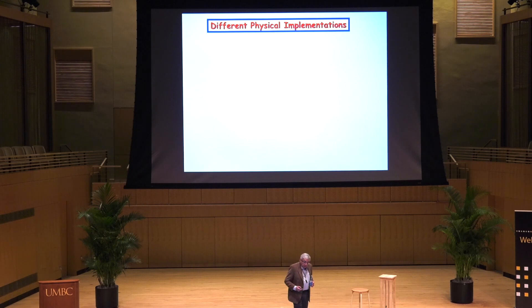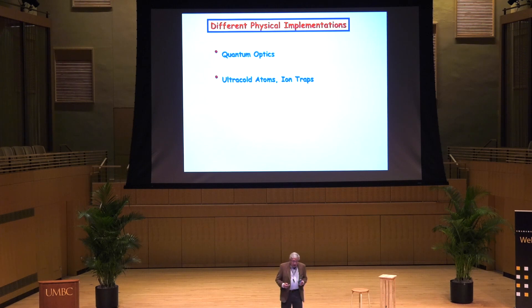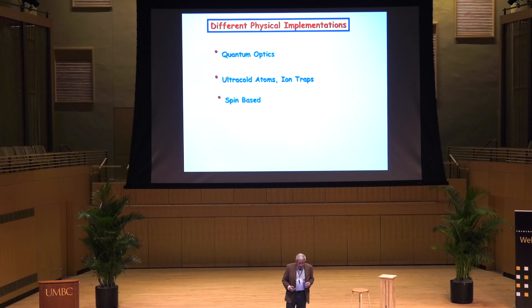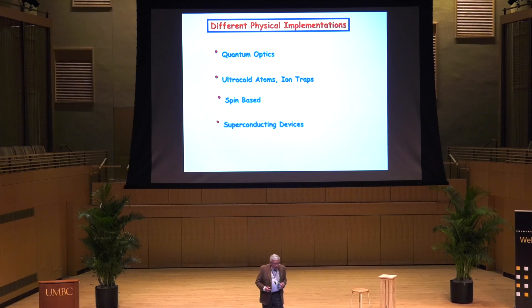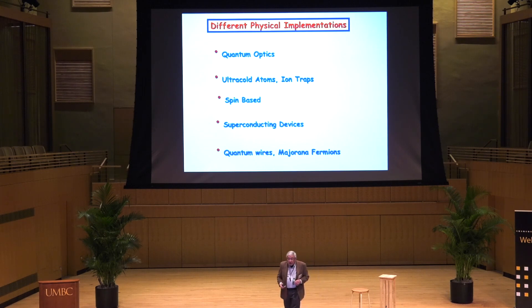There are many different implementations; I'll just mention a few. There's quantum optics, ultra-cold ion traps — in fact, my student Dr. Shehab now works for the company IonQ, and they're on their way to building a quantum computer. There are spin-based quantum computers, superconducting devices like the IBM Q, and quantum wires for what we know as Majorana fermions, used in topological computing.